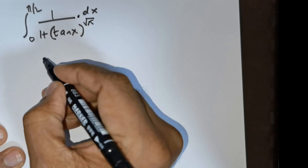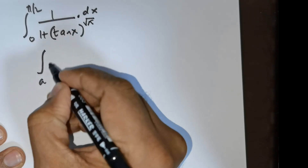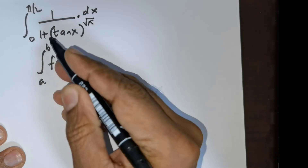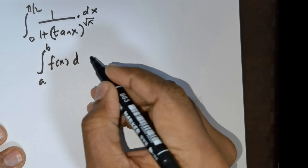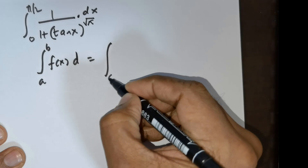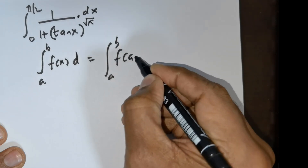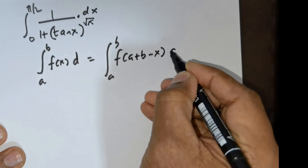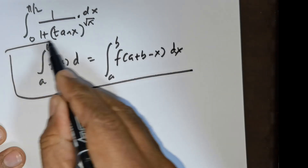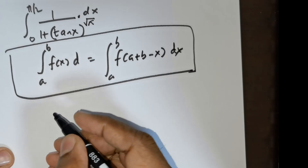How are we going to do this? Foremost, I would like to bring your attention to the King's property. If we are given integral a to b of f(x) dx, then this can be rewritten as integral a to b of f(a + b − x) dx. This is the property known as the King's property, which we will be applying.